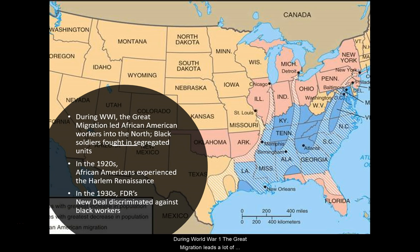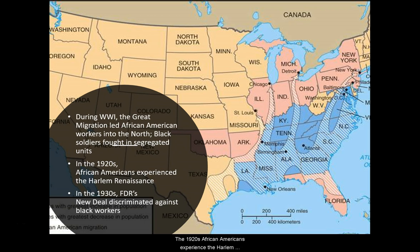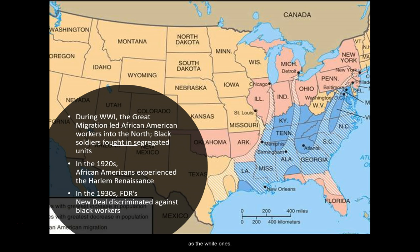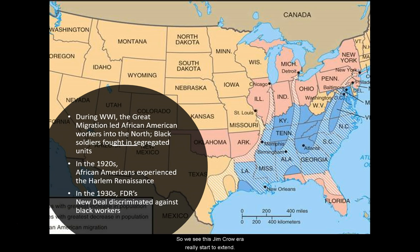During World War I, the Great Migration led many African American workers to the North, where they could get jobs in war industries. Black soldiers began to fight in segregated units during the war. In the 1920s, African Americans experienced the Harlem Renaissance — a flourishing of their culture that spread out of the borough of Harlem into the rest of the United States. Then in the 1930s, FDR's New Deal discriminated against Black workers, who didn't receive the same rights or housing opportunities as white workers, extending the Jim Crow era well into the 20th century.